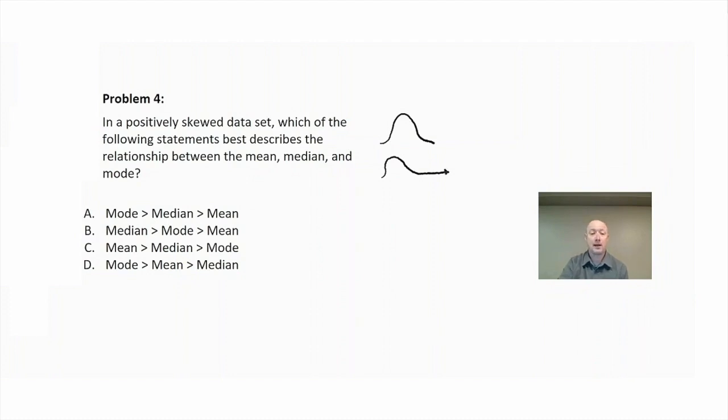So what effect does that have on the mode, median, and mean? Well, because we are extending out that positive side of the higher values, that's going to drag the mean with it. So the mean is going to be bigger than the median. So we know that the mean has to be greater than the median. So anyone that has the median greater than the mean, we're going to eliminate.